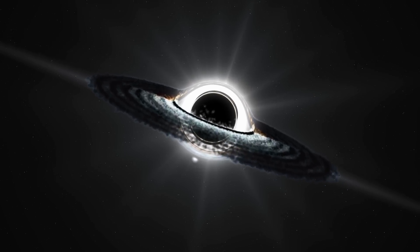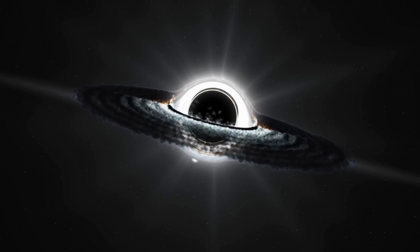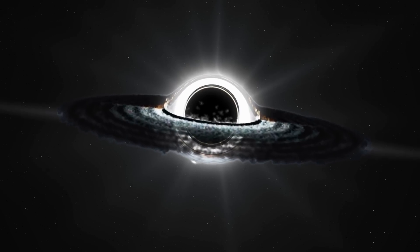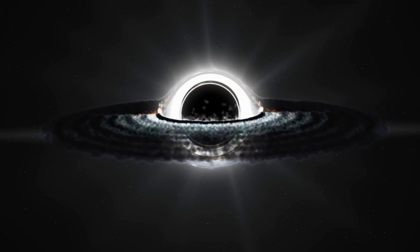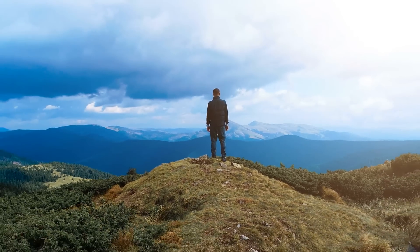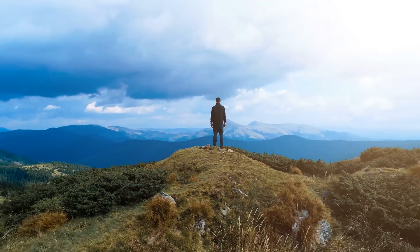General relativity was also later shown to predict the bending of light due to a massive object and the existence of black holes. Over the years, this became the best theory we have to describe the world we live in.